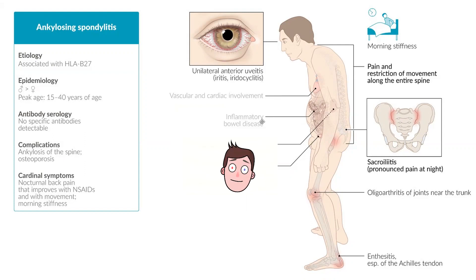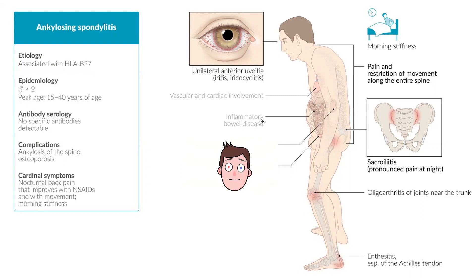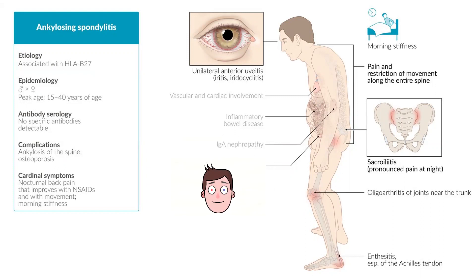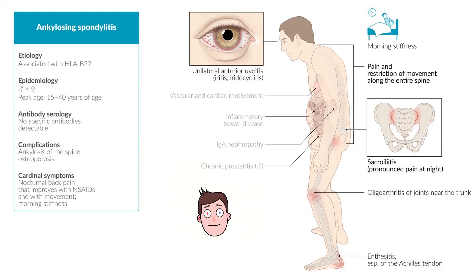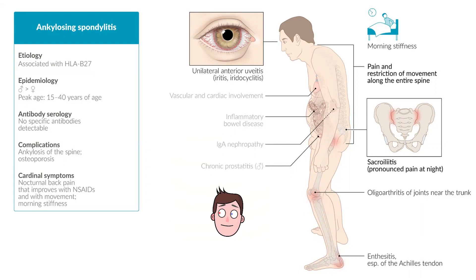Inflammatory bowel disease is also commonly associated — this includes Crohn's and ulcerative colitis, with abdominal pain and commonly bloody stools. IgA nephropathy is another rare complication where an IgA antibody binds an antigen and that complex travels to the kidney, blocking a kidney blood vessel and damaging it. Chronic prostatitis — inflammation of the prostate — causes cloudy urine and pain with urination.